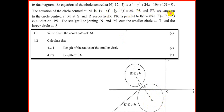PS and PR are tangents. Remember, two tangents from a common point are equal. PR is parallel to the x-axis — it is a horizontal line. We're also given point K(−17, −5), which is on the tangent PS.